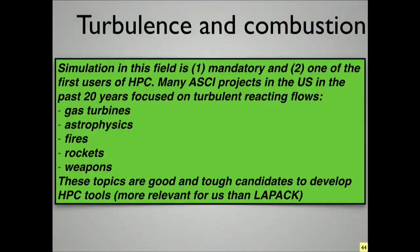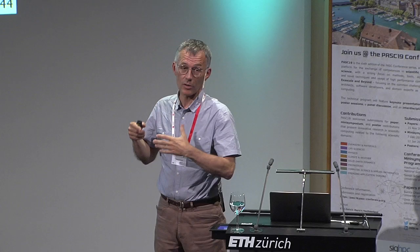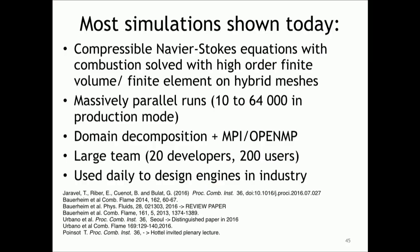If you look at all the ASCI projects, for example, in the past, you will find a lot of customers coming from the combustion community — gas turbines, astrophysics, fires, rockets, and many other applications. All these topics are good topics to test machines. They are much more complicated than LAPACK. When LAPACK is able to get 60% of the nominal power of an HPC machine, these codes have a hard time going to 15%. So we need to work on these big machines, and that's difficult. This code is used today by about 200 users in industry to design engines.